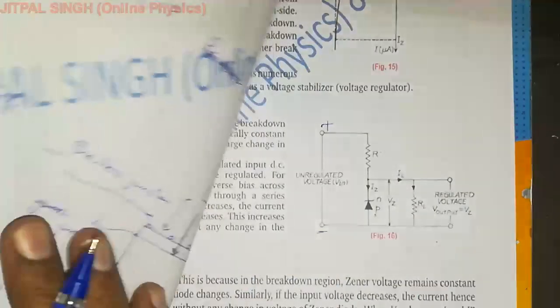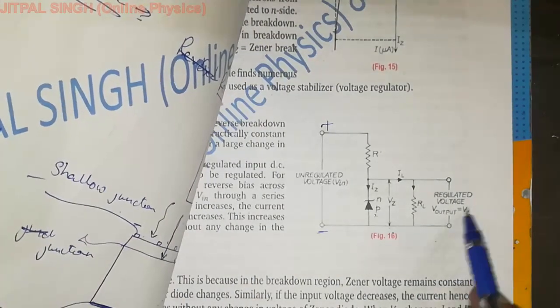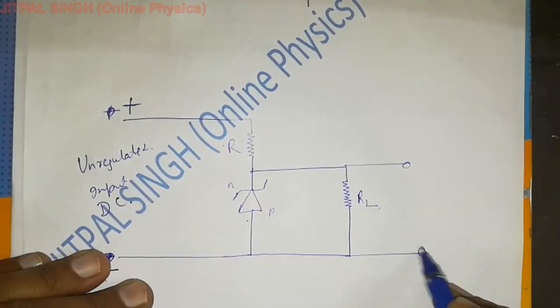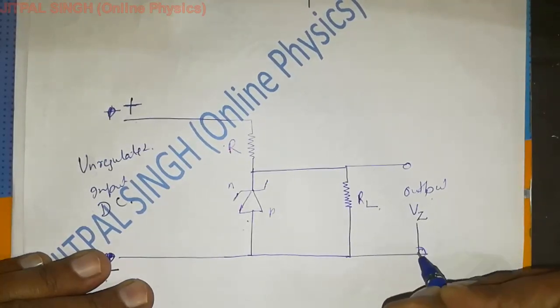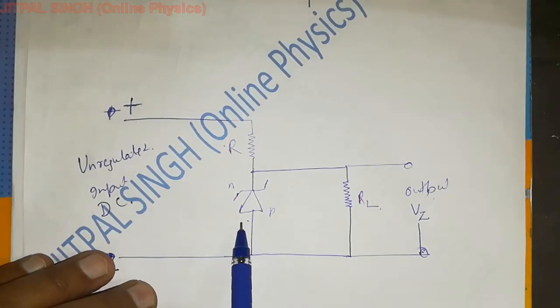This is the device across which I will maintain voltage. So this is R suffix L, load resistance across which voltage is to be regulated. Now, see, regulated voltage V output. And here, output is specially V suffix Z. Now V suffix Z, what was it? It is Zener diode breakdown voltage. If you have to maintain 40 volts.